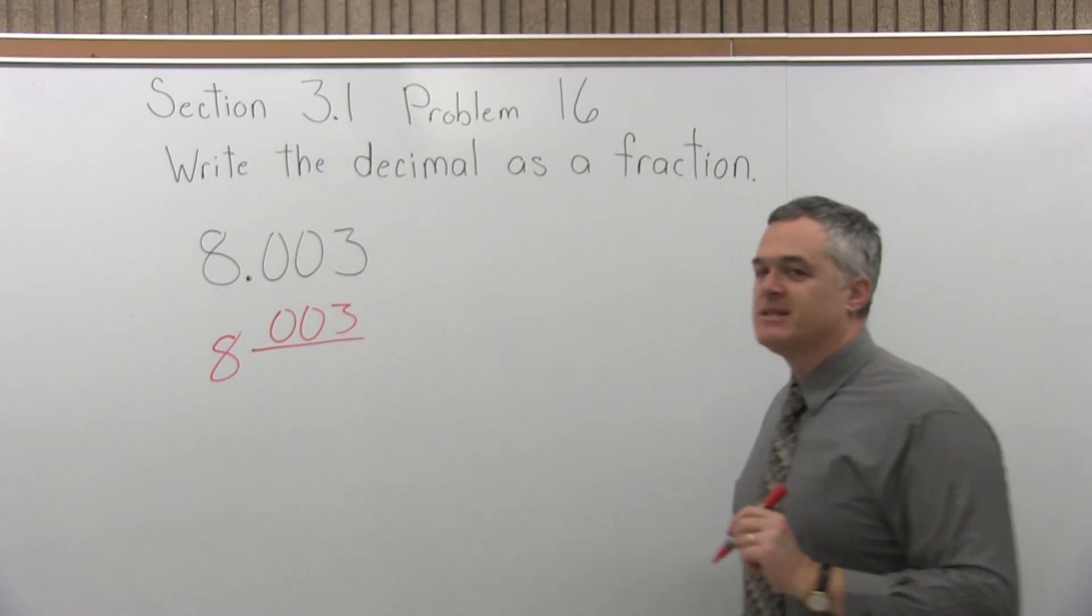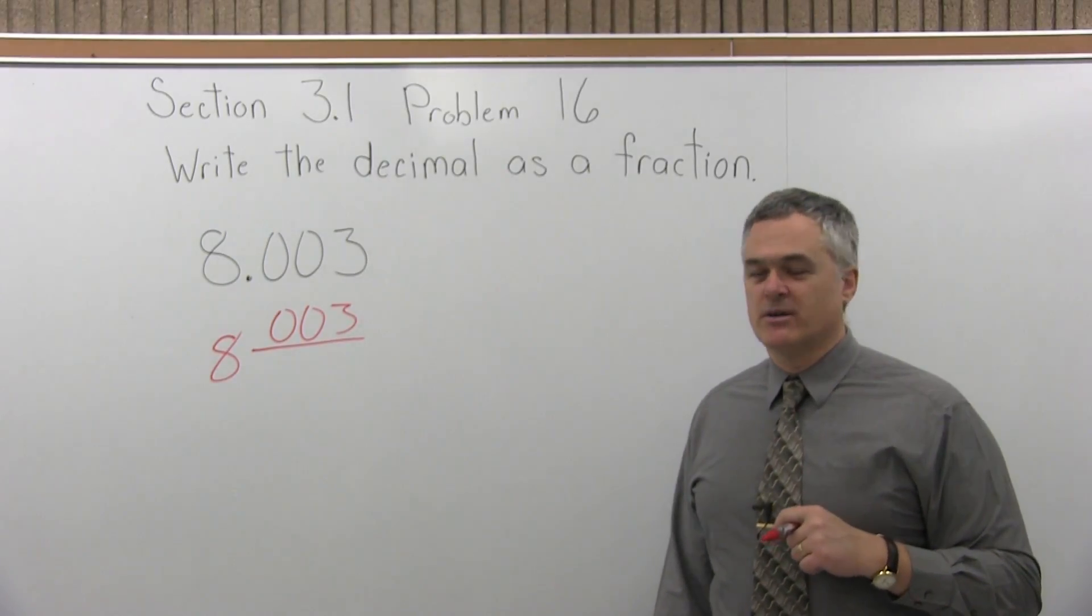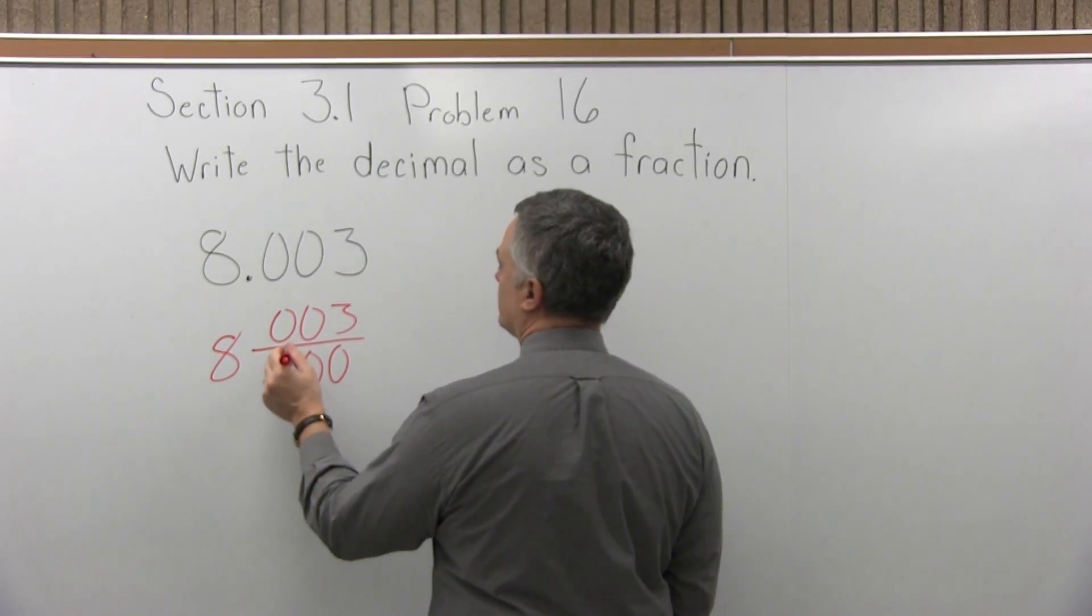And then the second step, step 2, is put a 0 under each digit that's in the numerator. So in the numerator, I have three digits, so I put three 0s in the denominator.